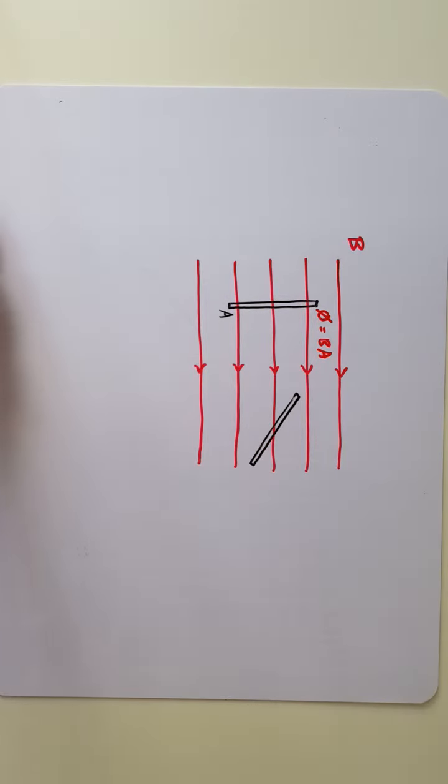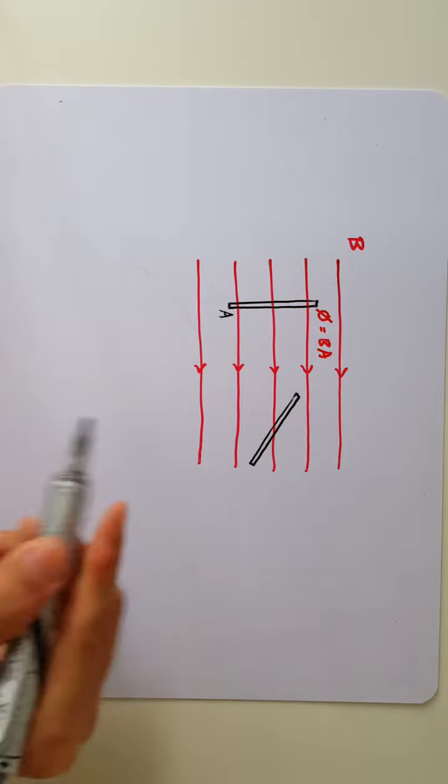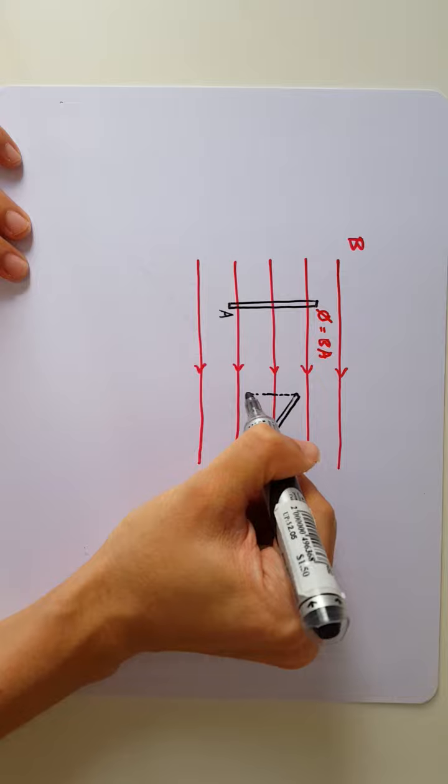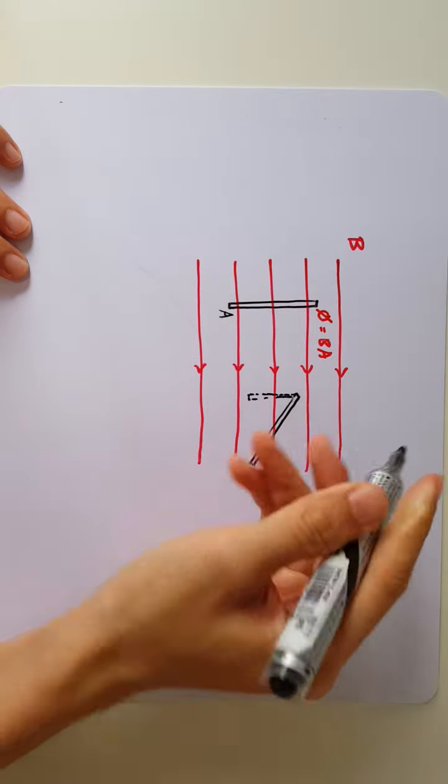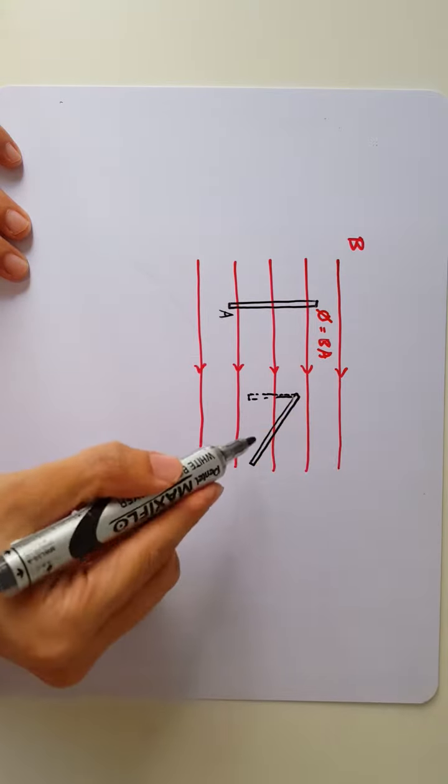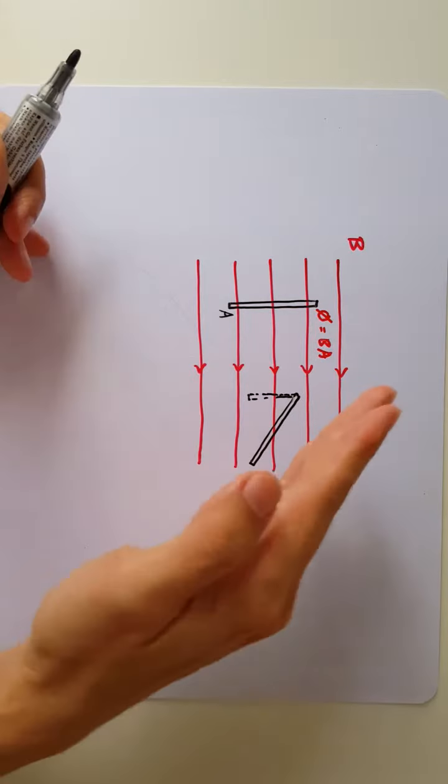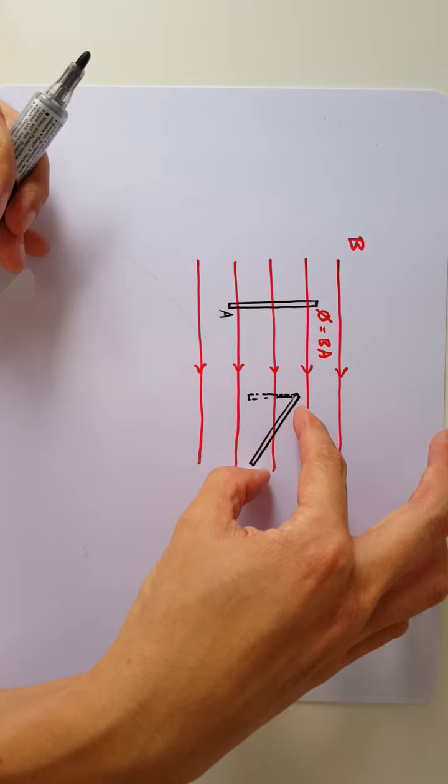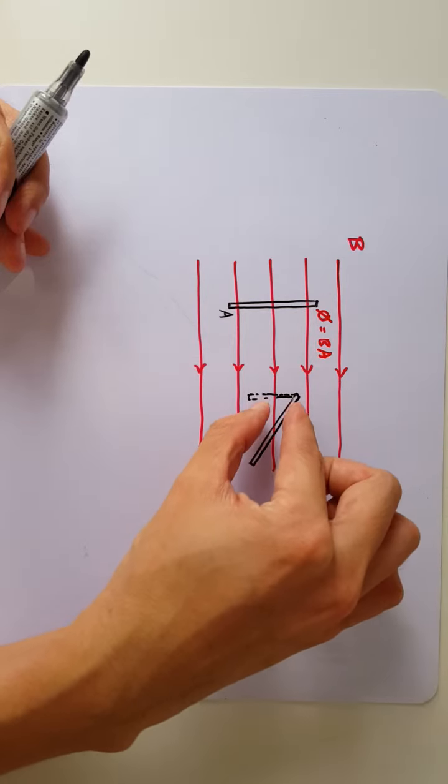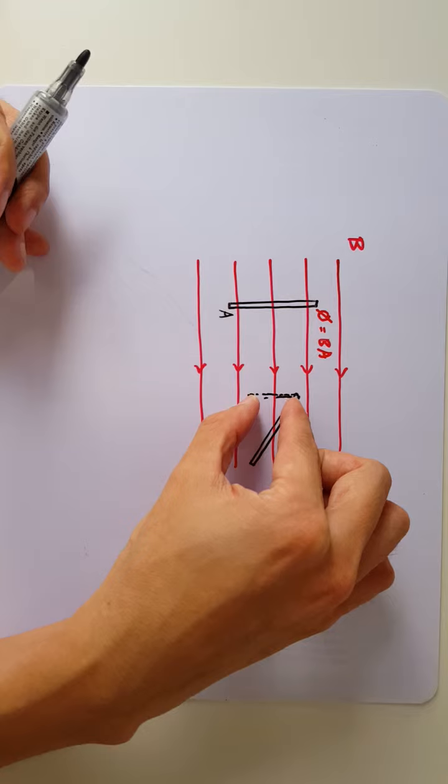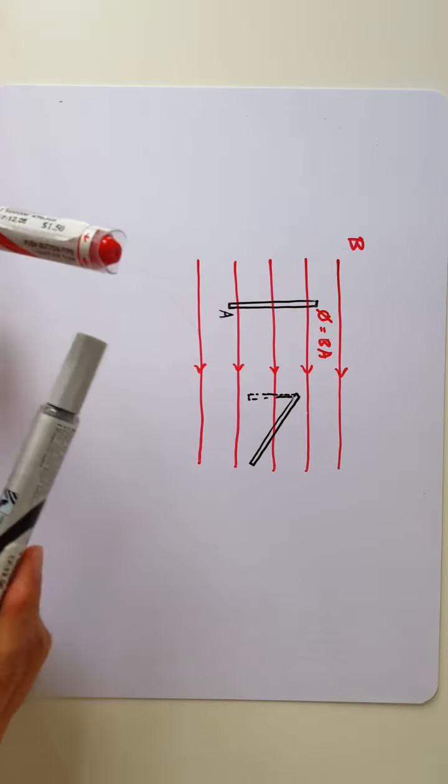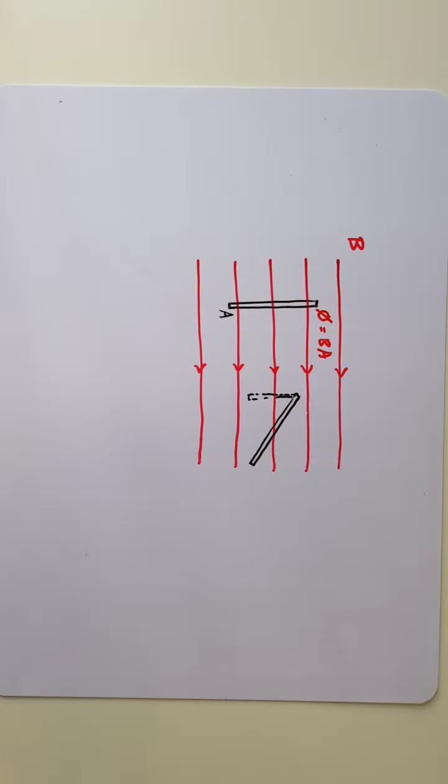One way of understanding this is to realize that effectively we have only this area that's capturing the flux. So having such a big area coil is going to allow you to capture just as much flux as if you have a smaller coil, but you have this coil facing the magnetic field directly, perpendicularly.